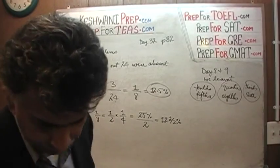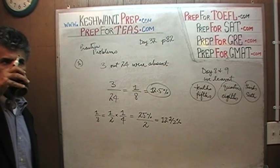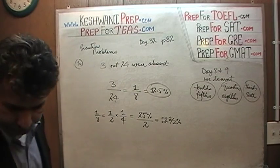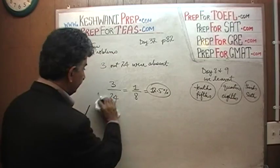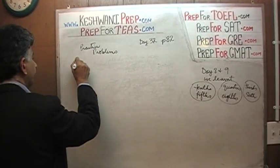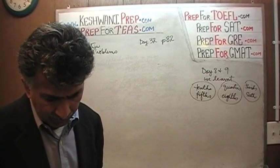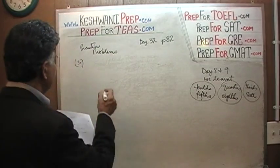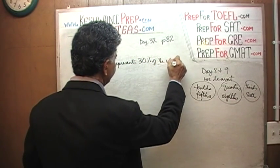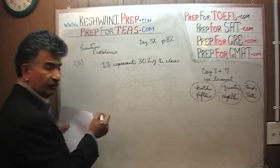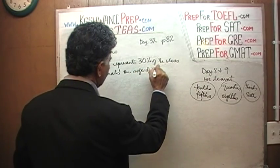Let's go to the next one — number 3, the last one on the page. Number 3: 18 students who received an A in math represents 30% of the class. So, 18 represents 30% of the class. The question simply is: what is the size of the class?